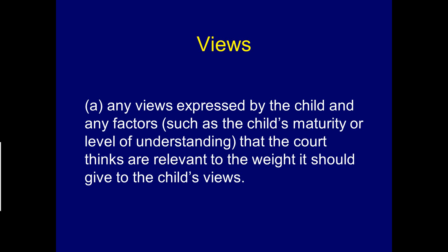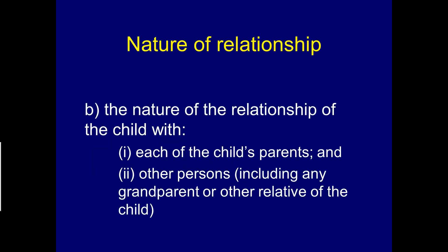Some children feel caught in the middle between their parents and don't want to take sides, whereas some teenagers have very strong opinions about which parent they want to live with or whether they'd feel comfortable in a shared care arrangement. Paragraph B is the nature of the relationship of the child with the parents and any other people such as grandparents or relatives. Paragraph C — involvement with the child — was introduced in 2011 and replaced what had previously been called the Friendly Parent Provision, which had been inserted in 2006.